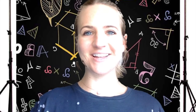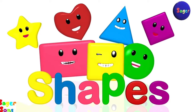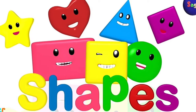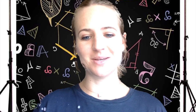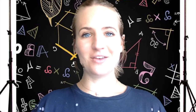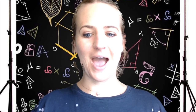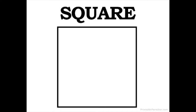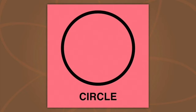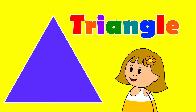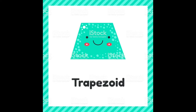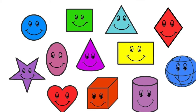Hey everyone, Ms. Blair here, and today we're going to talk about shapes. There are so many different types of shapes. Let's see if we can think of some different kinds of shapes. How about squares, rectangles, circles, triangles, trapezoids. Those are all different kinds of shapes.